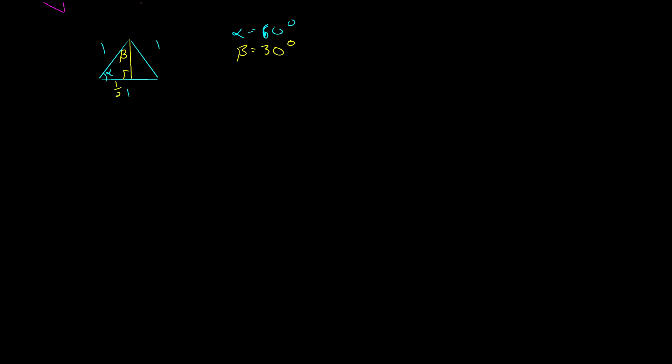And so this triangle here, not the whole equilateral triangle with sides of one, has a 60 degree angle and a 30 degree angle, a side of one half and a hypotenuse of one. So this side, using the Pythagorean theorem, that one squared equals my unknown side, which I'll call a squared, plus one half squared. So one squared minus one fourth equals a squared, or three fourths equals a squared, or a equals the square root of three over two. And so now I have my triangle.